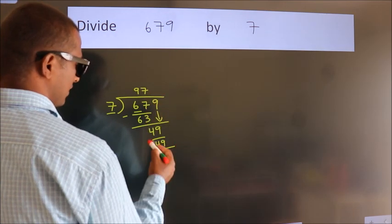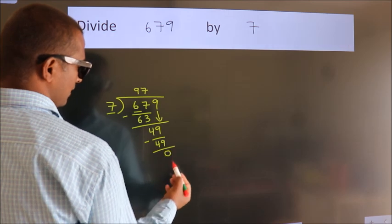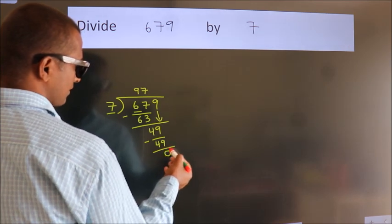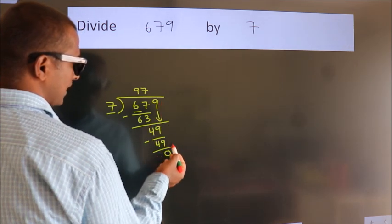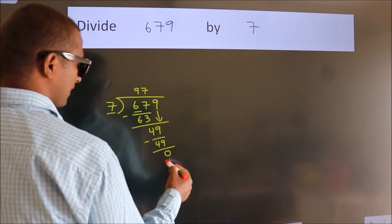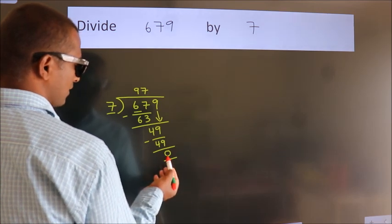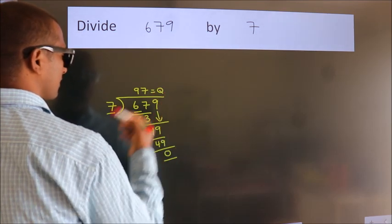Now, we subtract. We get 0. After this, no more numbers to bring it down. And we got remainder 0. So, this is our quotient. We'll see you next time. Thank you.